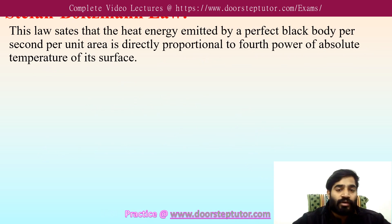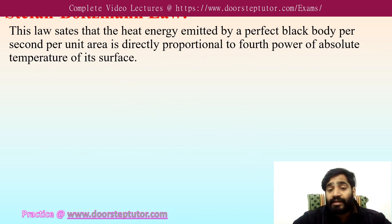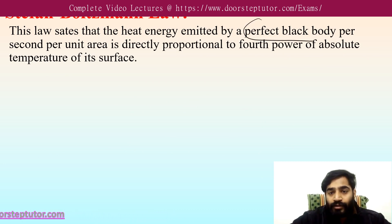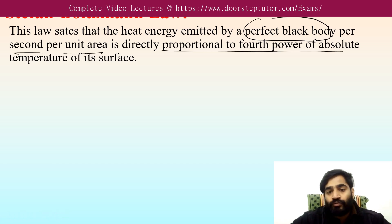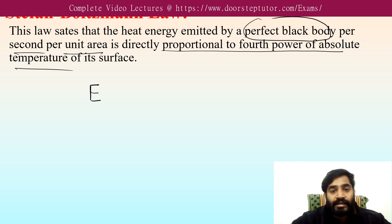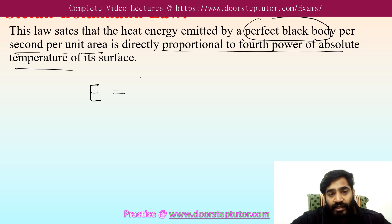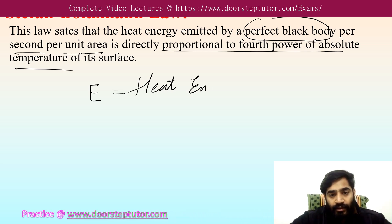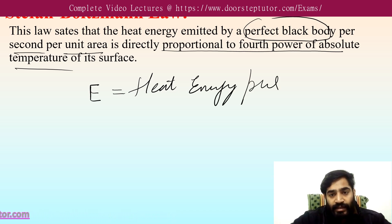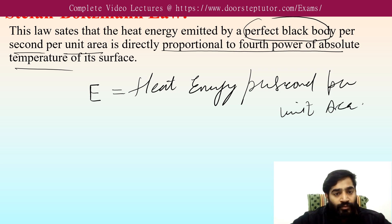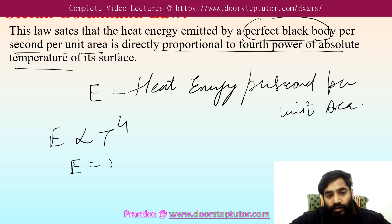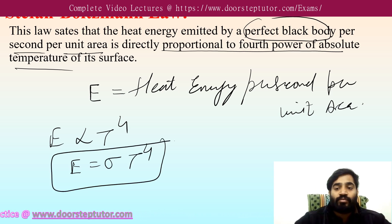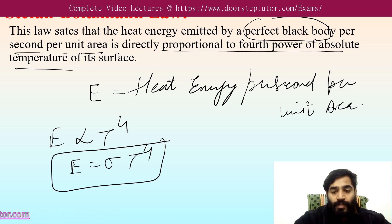Now come to Stefan-Boltzmann law. It states that the energy emitted by a perfect black body per second per unit area is directly proportional to the fourth power of its absolute temperature. So E is proportional to T to the power four, and removing the proportionality sign introduces the Stefan-Boltzmann constant.